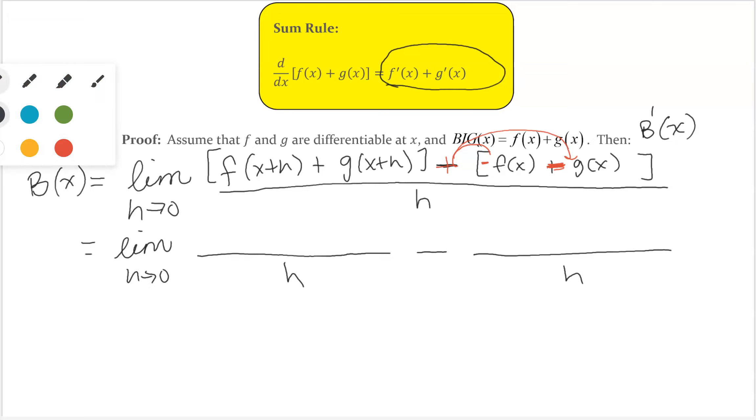What I'm going to do next is I could rearrange f(x+h) minus f(x). I'm going to take this and put it together with that. And then the other one, g(x), that would be plus right here, g(x+h) minus g(x).